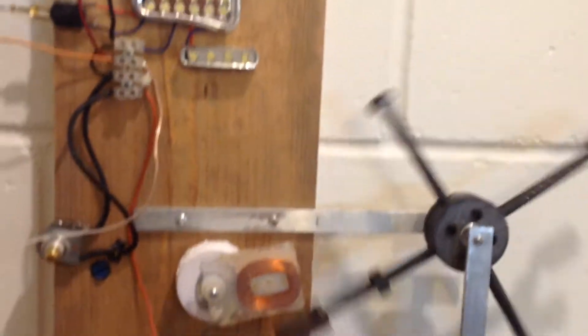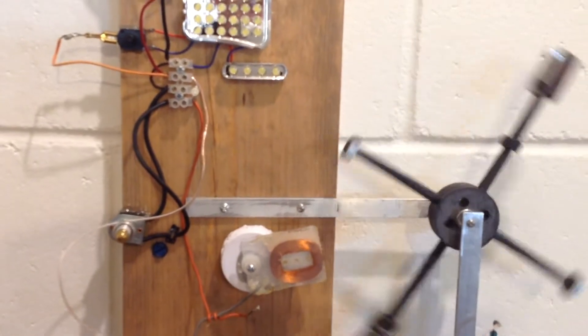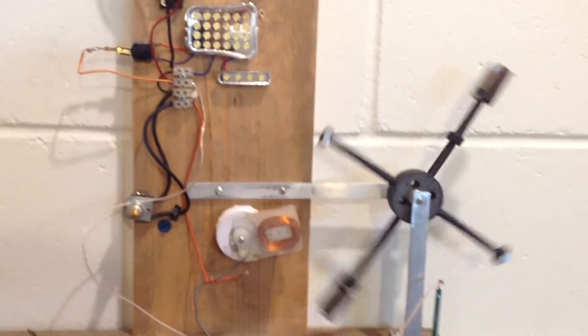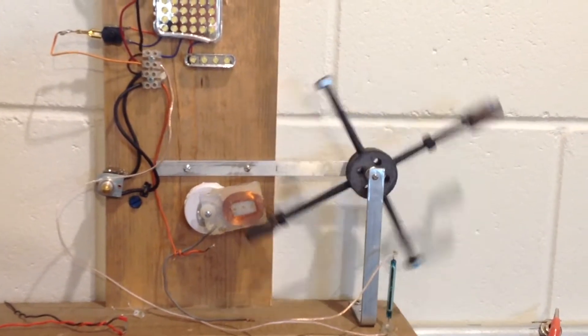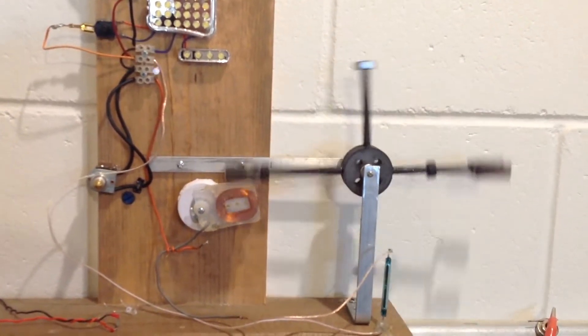They shut the lights off so they'll pick up a little bit more speed. The flashing you see on that one LED in the upper left there is from the flyback of the coil.